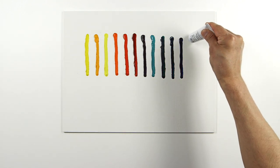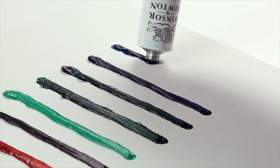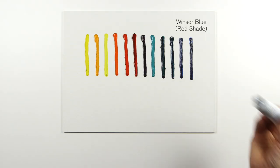And finally, this is Winsor Blue Red Shade, which is a deep, intense blue with a red undertone.